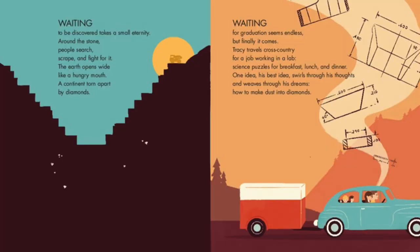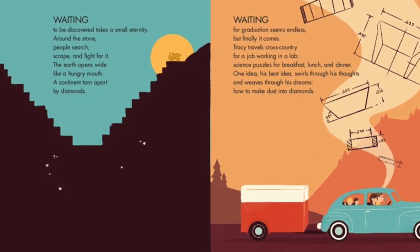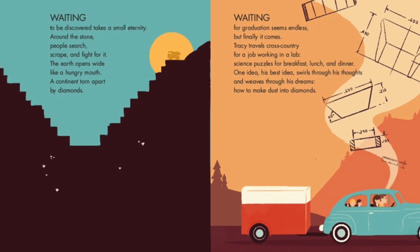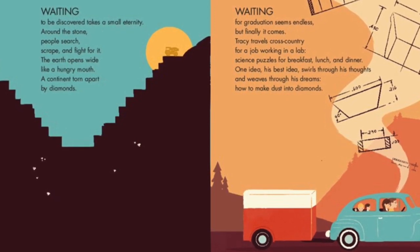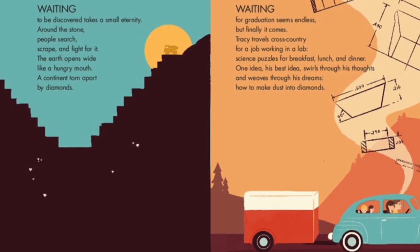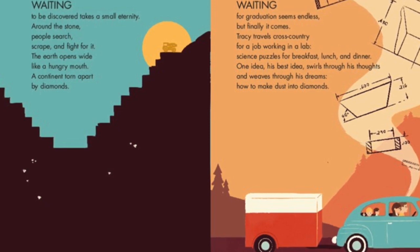For example, on one spread she talks on one side about how the diamond is waiting to be discovered: 'Takes a small eternity around the stone. People search, scrape, and fight for it. The earth opens wide like a hungry mouth. A continent tore apart by diamond.' And then on the other spread, Tracy also is waiting for graduation — seems endless, but finally it comes. Tracy travels cross-country for a job working in a lab, 'science puzzles for breakfast, lunch, and dinner. One idea, his best idea, swirls through his thoughts and weaves through his dreams: how to make dust into diamonds.' Each spread is structured like that, with a similar point in the story between the diamond and Tracy himself. To me, that's a really innovative way to tell the story.